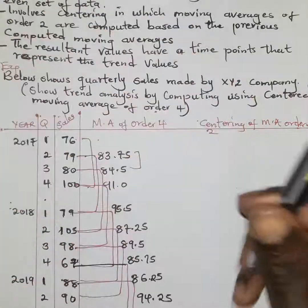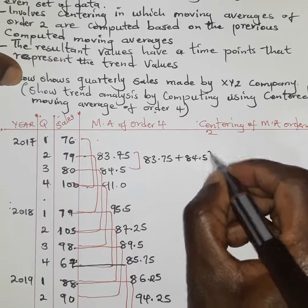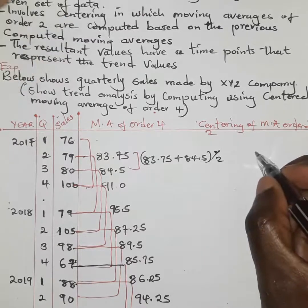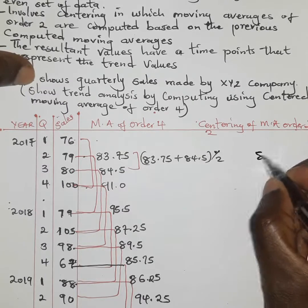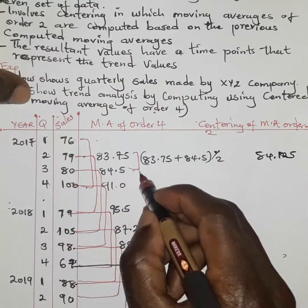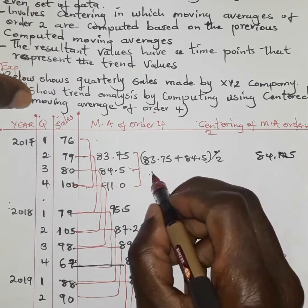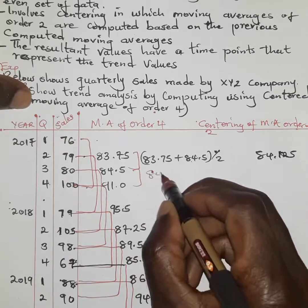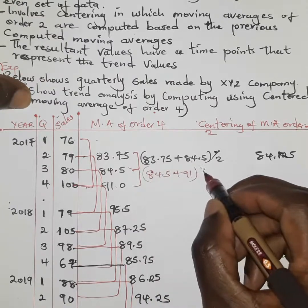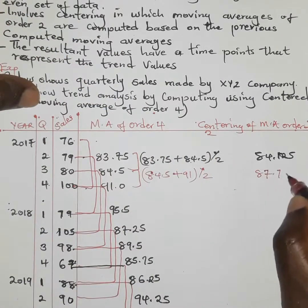For the first pair: 83.75 plus 84.5, divided by two, gives 84.125. For the next pair: 84.5 plus 91.0, divided by two, gives 87.75.